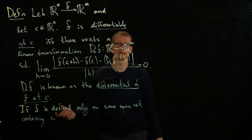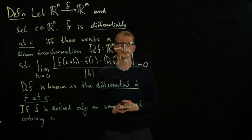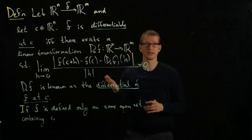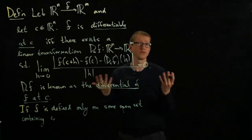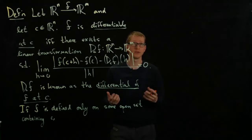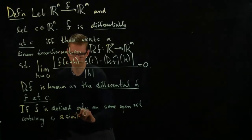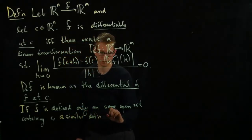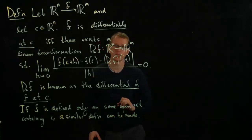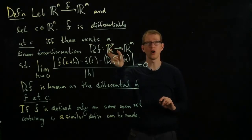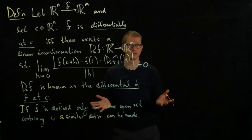If C is in some open set, then this expression still makes sense for all H sufficiently close to C. You can see that this definition doesn't include any information from the function F for large H. All we care about is the proximity of the point C. A similar definition can be made. And again, the linear transformation is still defined on all of R^n, not just some smaller subset around zero.